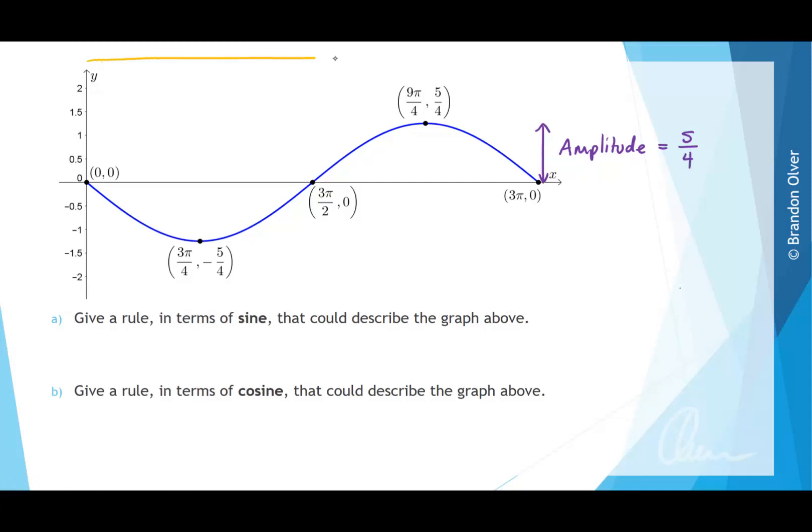The second really important thing is the period of the graph, and the period is the length of the interval for one cycle. So this is the period, and it is equal to 3 pi.